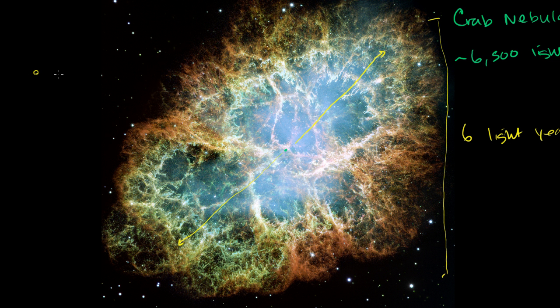But we have to be very clear here. Because the Crab Nebula at its core is roughly 6,500 light years away, even this light, even this image we see right here is that nebula as it was 6,500 years ago.